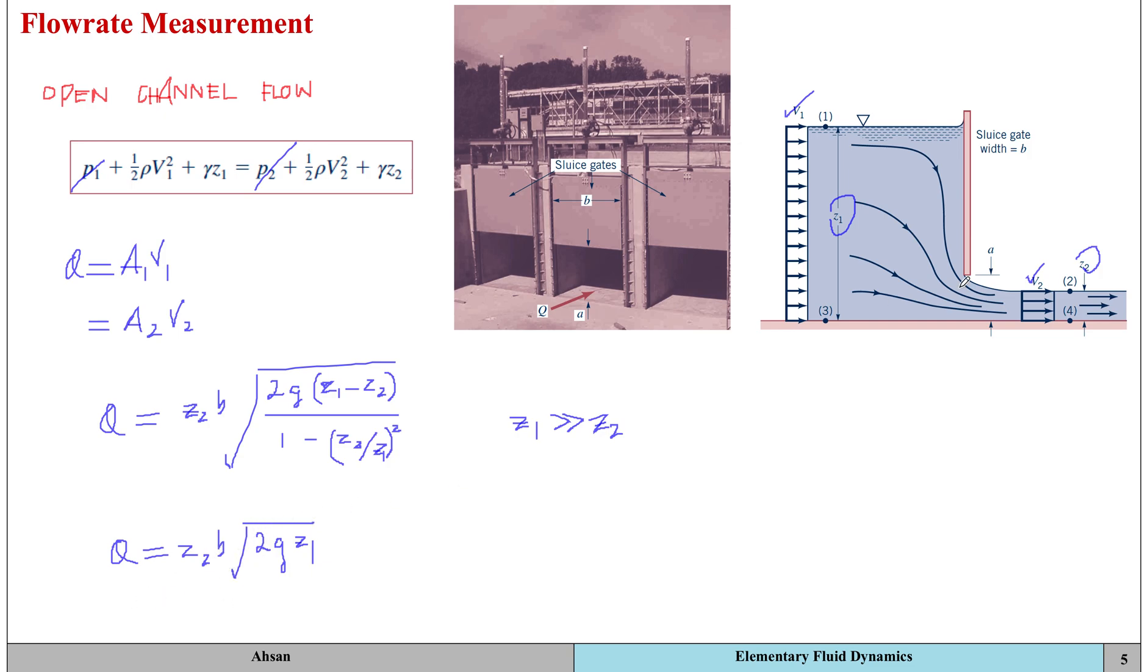One important thing to note is that we used z2 instead of using A, which is the opening of the gate. Why? Because there is a sharp bend here, and because of that the flow is restricted. The fluid cannot turn a sharp 90 degree angle, so a vena contracta forms. We need to account for the contraction coefficient, C subscript c.